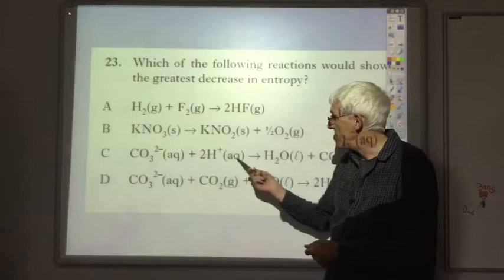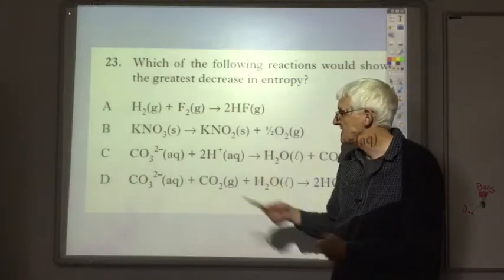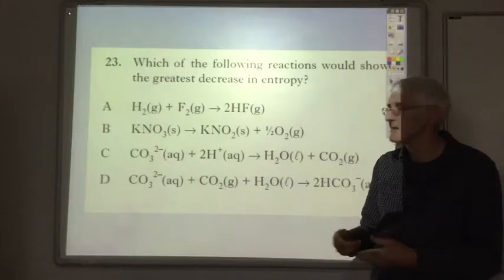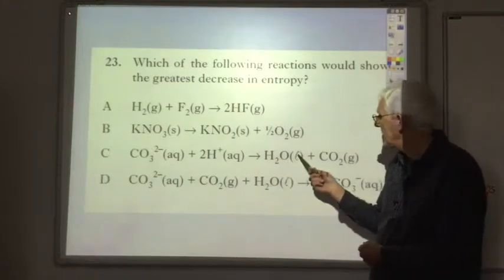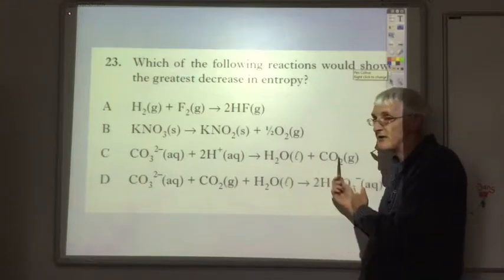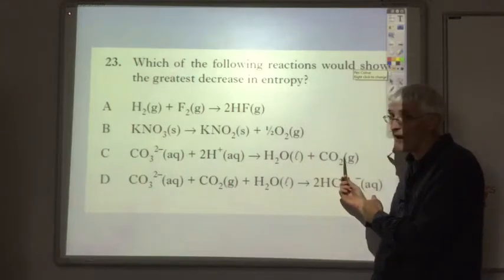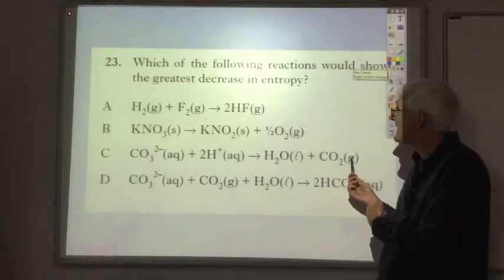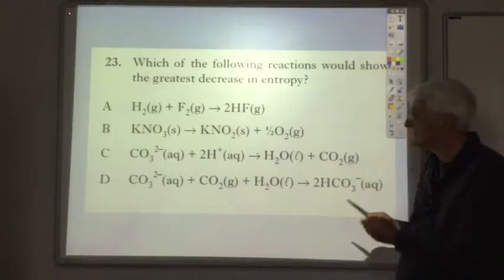C, two aqueous solutions, so solutions just consider as liquids when it comes to entropy. And here we've got a liquid and a gas. So once more, we've produced a gas, so we've produced a lot more chaos, a lot more disorder, a lot higher entropy. So it won't be C, it's going to have to be D.